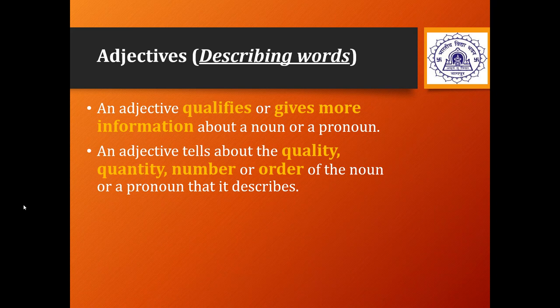Adjectives are nothing but describing words. They qualify or, in other words, give more information about a noun or a pronoun. Adjectives are of different kinds — they tell us about the quality, quantity, number, order, or degree of the noun or pronoun. Let us see all these types in detail.